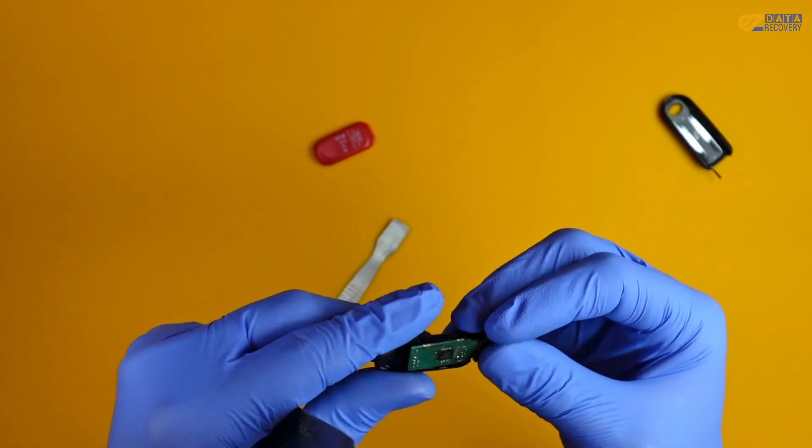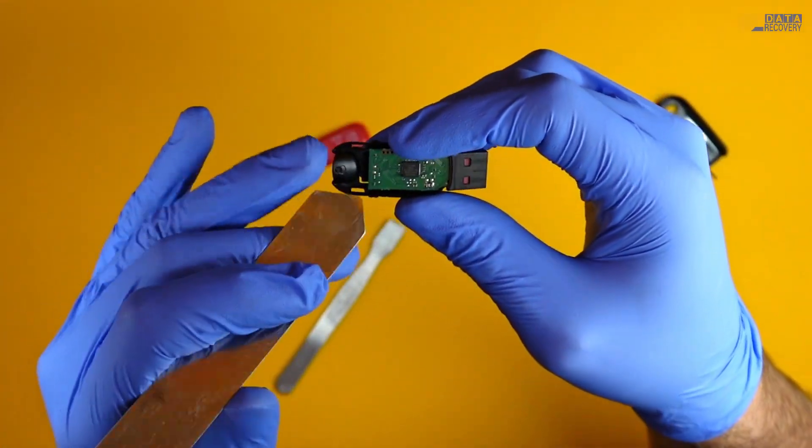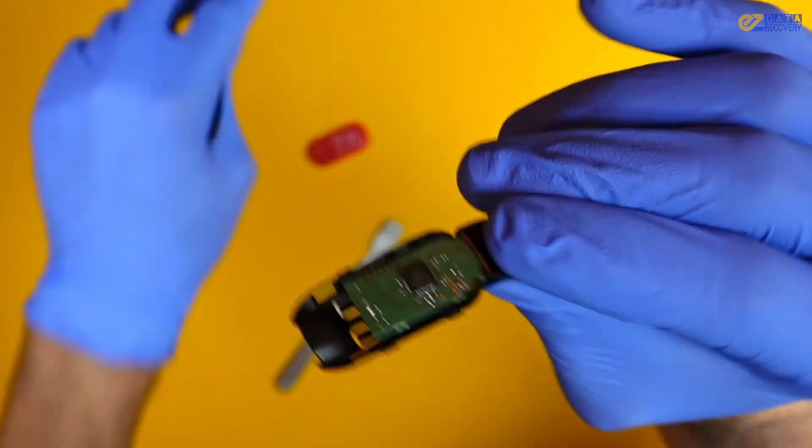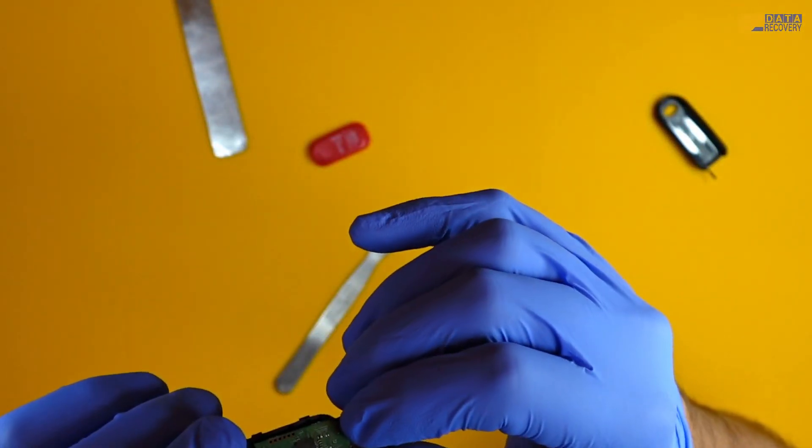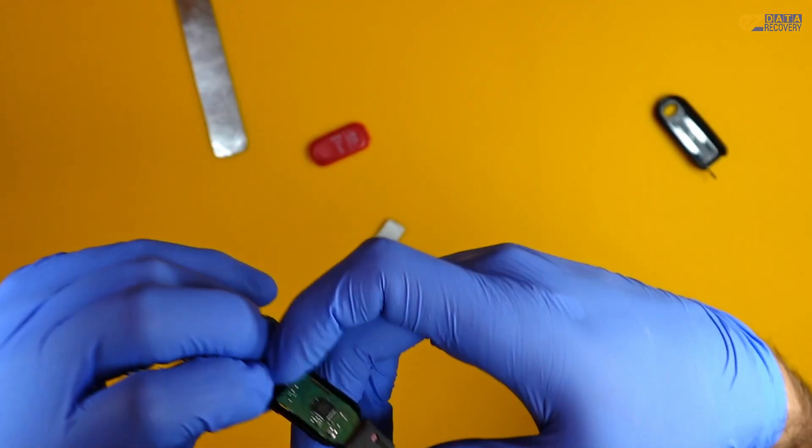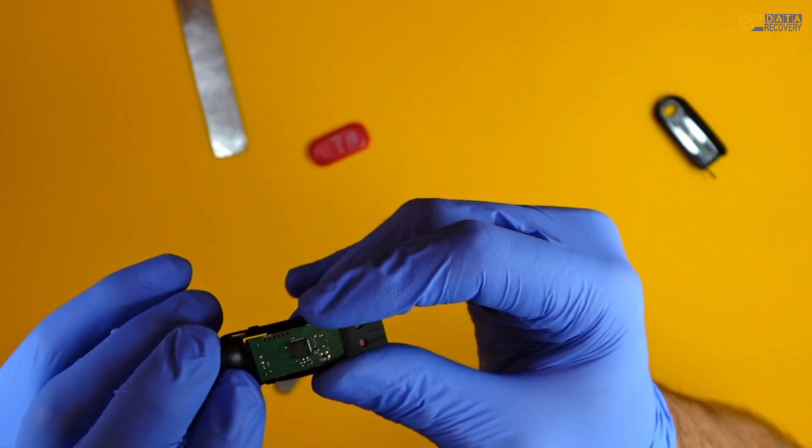So now we have the drive open here. We can see the controller there. And that chip is going to be the one talking with the storage, the NAND inside, and telling it how to store data, how to read, how to write, all that fun stuff. It's basically the conductor of the drive, so to speak.